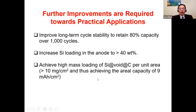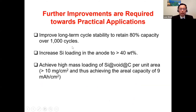For practical application, our powder still needs improvement. Specifically, we need to improve long-term cycle stability to retain 80% capacity over 1,000 cycles — currently we lose about 50% capacity over 1,000 cycles.